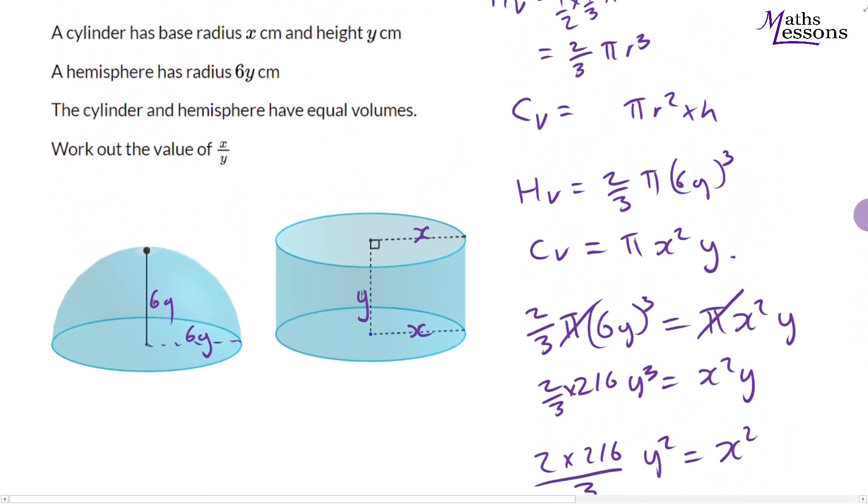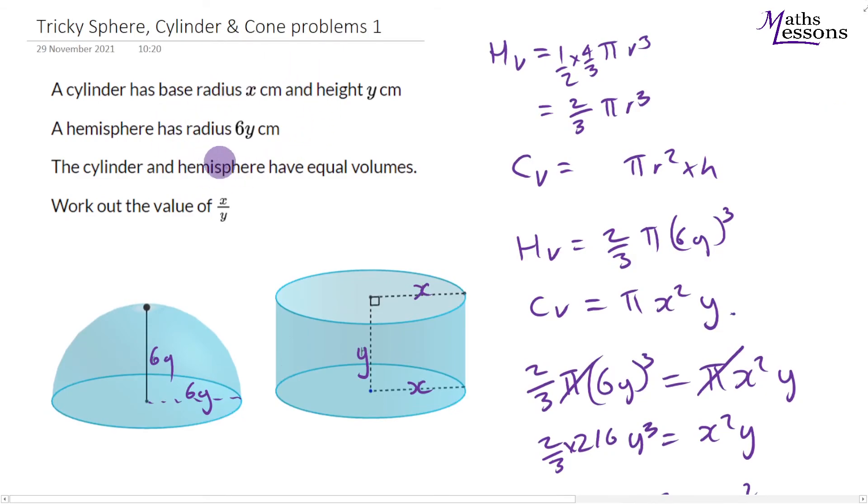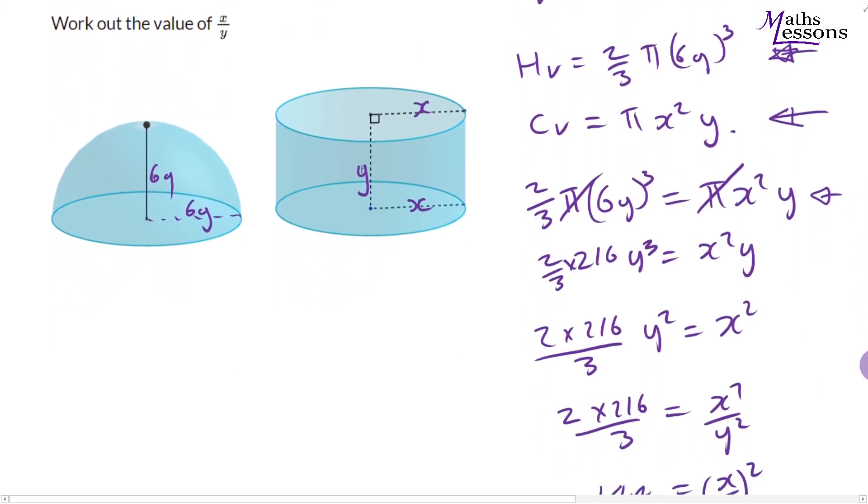So do remember when you've got these tricky problems, take the information in the question. Write down what you do know about it. Well, we do know the hemisphere volume, we can work it out. We know the volume of the sphere, we know hemisphere is half of that. We can get the volume of that. And we know that the radius of hemisphere is 6y, so put the 6y into that. And you will get a mark for just writing this line here. And similarly when you do cylinder volume, you'll probably get a mark for just doing that. You'll probably get another mark for making them equal to each other. And then it's just a question of whether you can do the algebra after that.